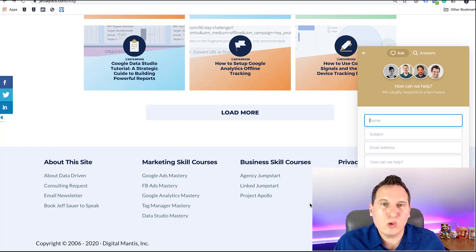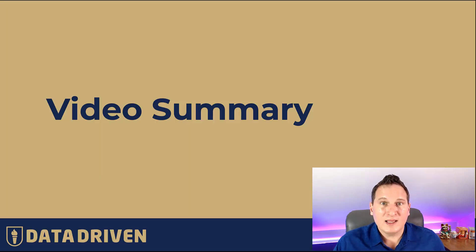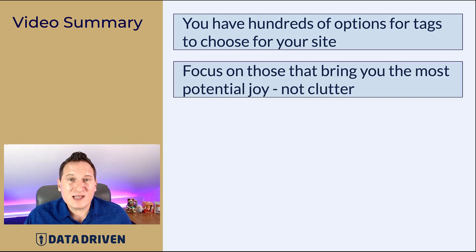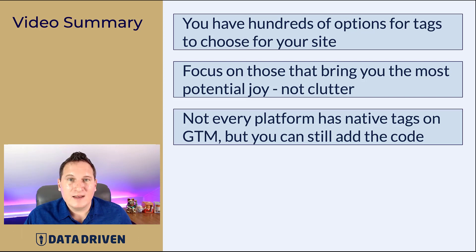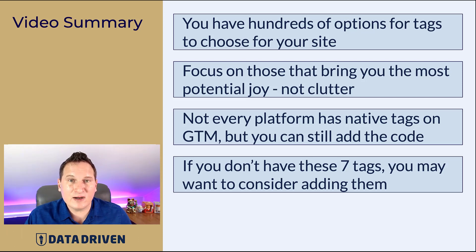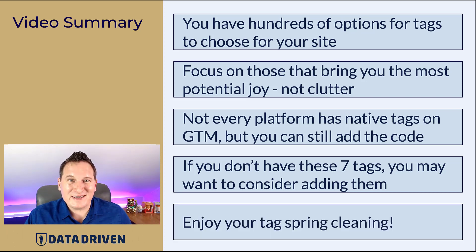That's it — the seven tags. To summarize: you have hundreds of options of tags to choose from for your site; focus on those that bring you the most potential joy, not on those that clutter your life. Not every platform has native tags on GTM, but you can still add code through a custom HTML tag. If you don't have these seven tags already, consider investing in that software, because they each add unique value that Google Analytics alone or your ad platform pixels can't do. Enjoy your tag spring cleaning — now is the time to let go of things that don't bring you joy.